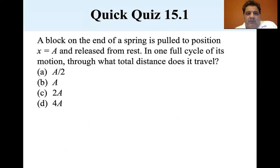So a block on the end of a spring is pulled to a position x equals A and released from rest. In one full cycle of its motion, through what total distance does it travel?